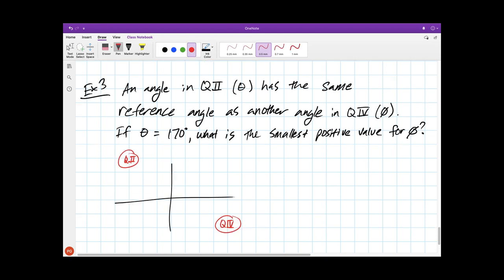So quadrant two is where theta is going to be. I'll draw theta in blue in this case. We know it's equal to 170, which is just a little bit short of 180 degrees. And we know that it has a reference angle here of 10 degrees. We're told in the question that is the same reference angle as another angle in quadrant four. So if our other angle, phi, has the same reference angle, phi starts at the same place theta does, but has a reference angle in quadrant four equal to 10 degrees.